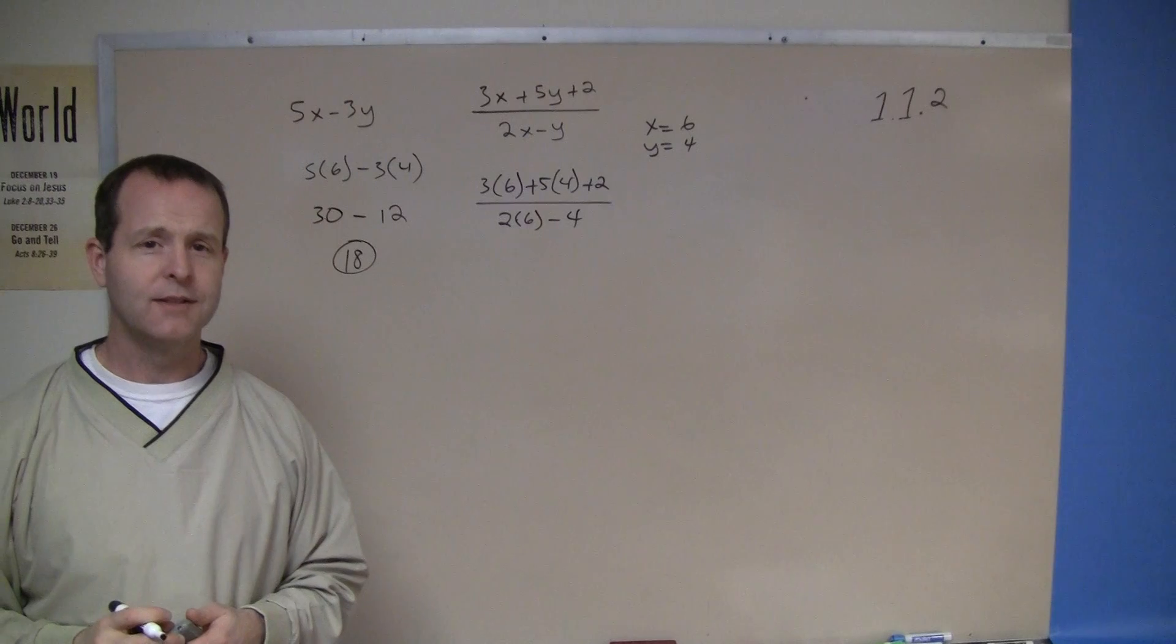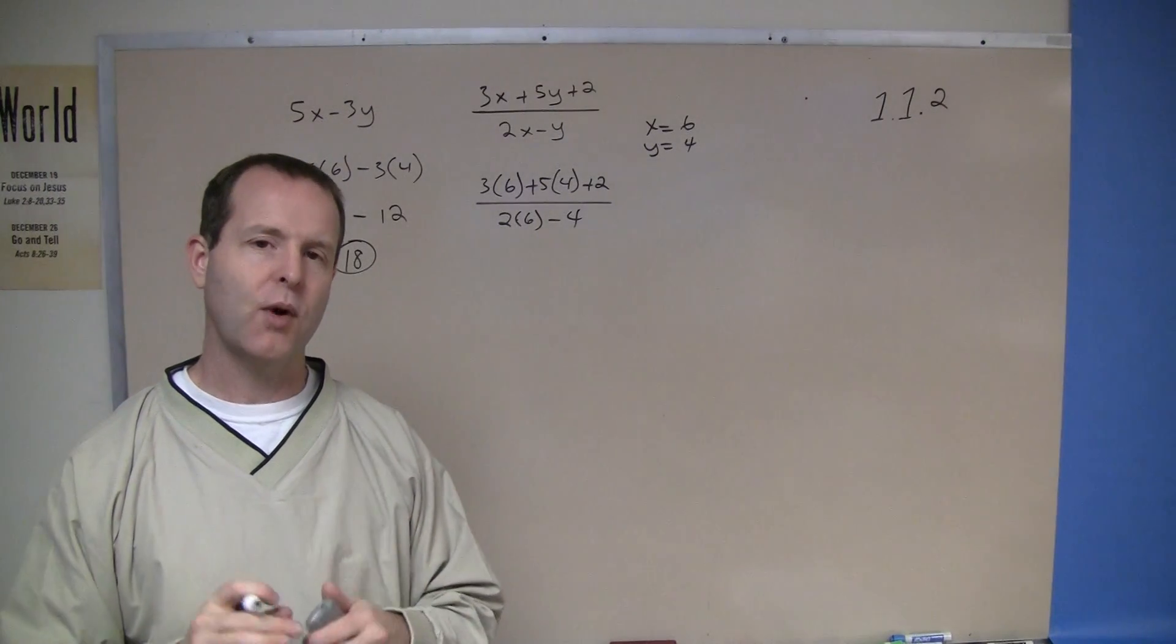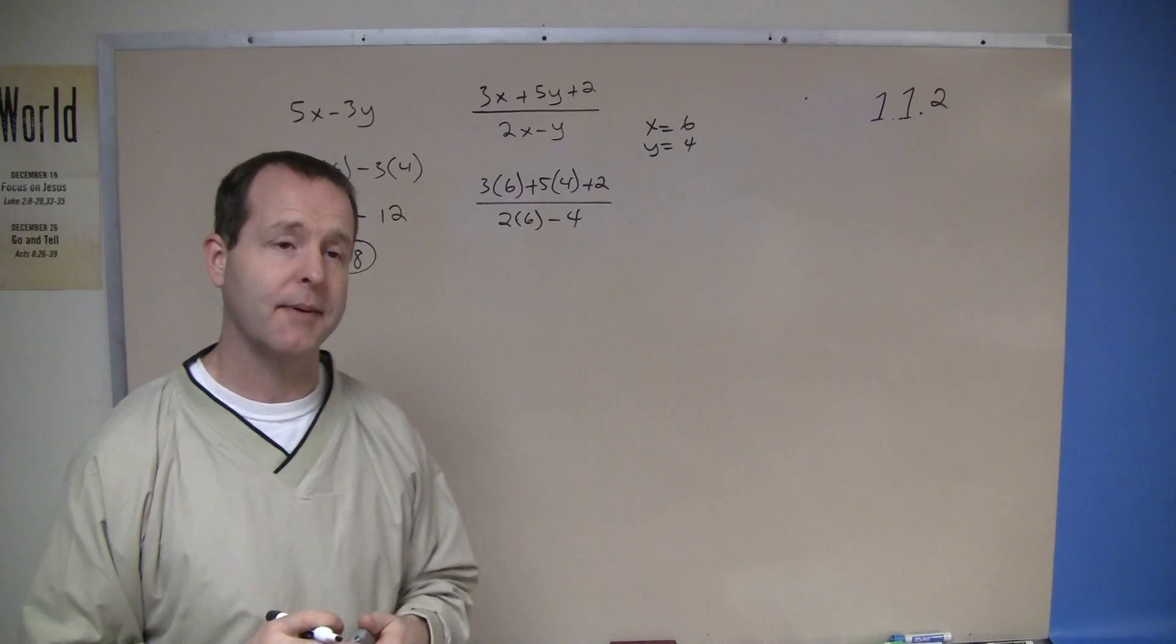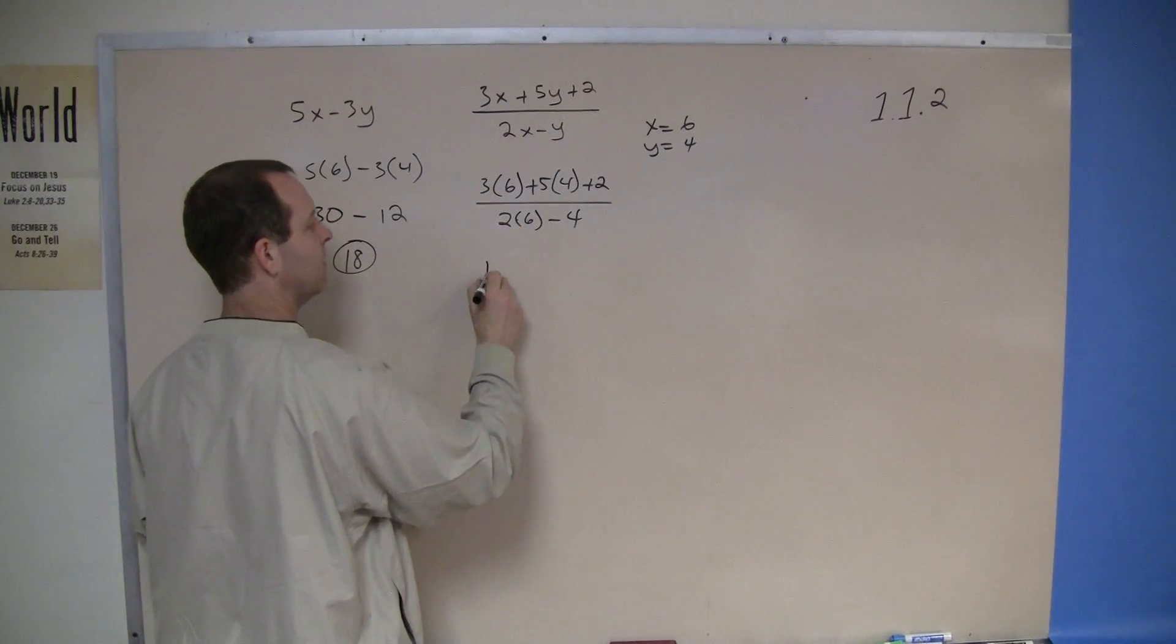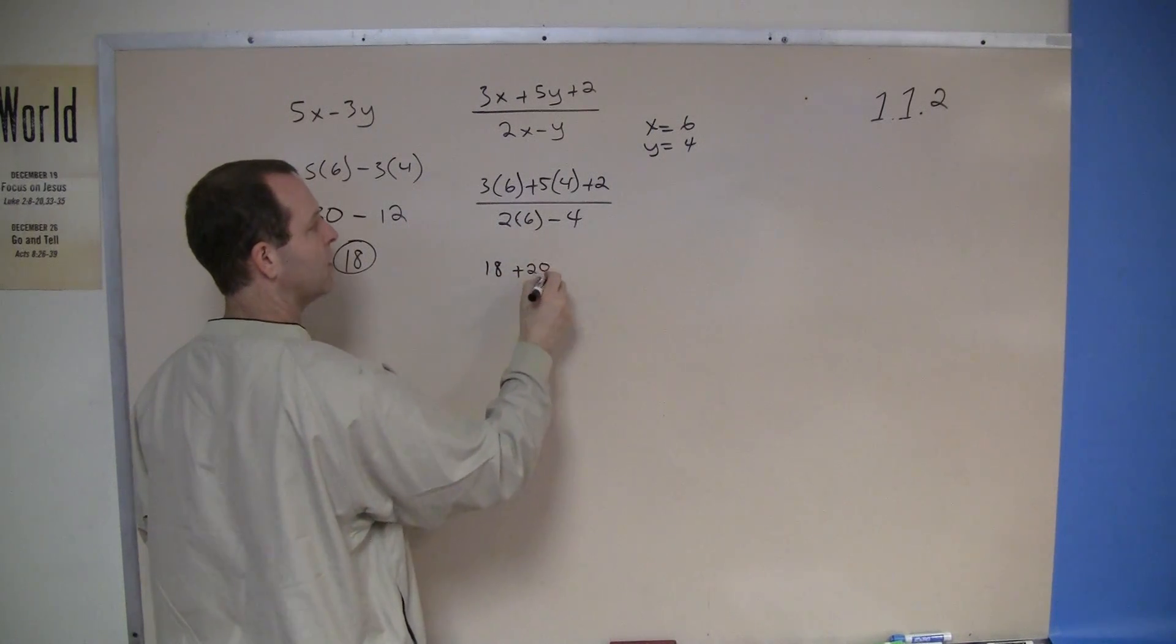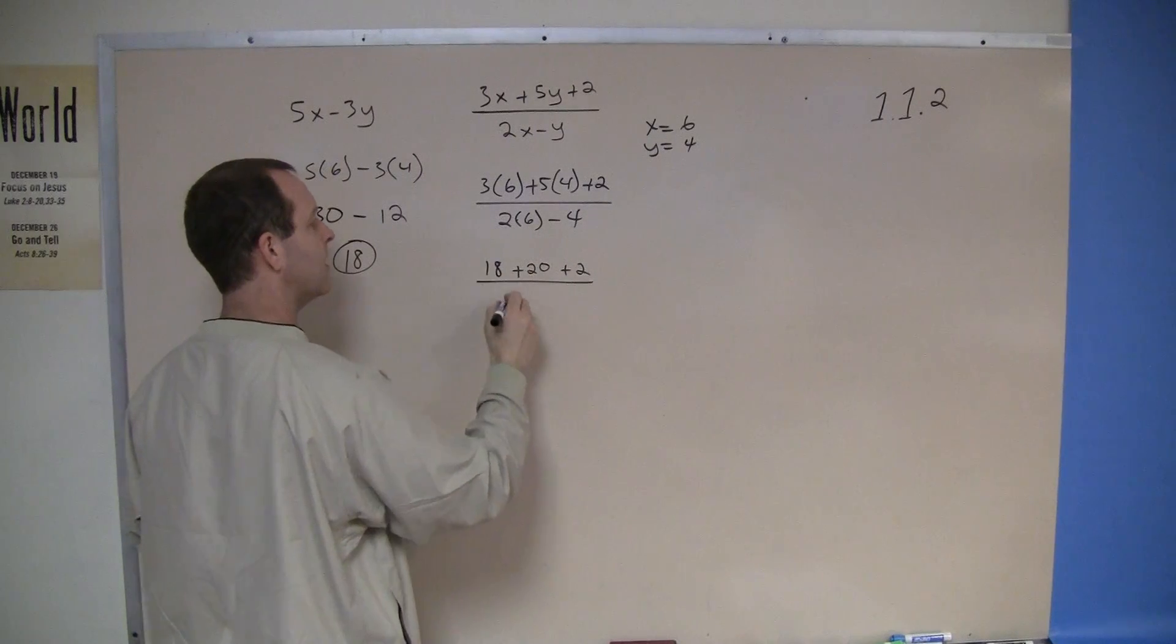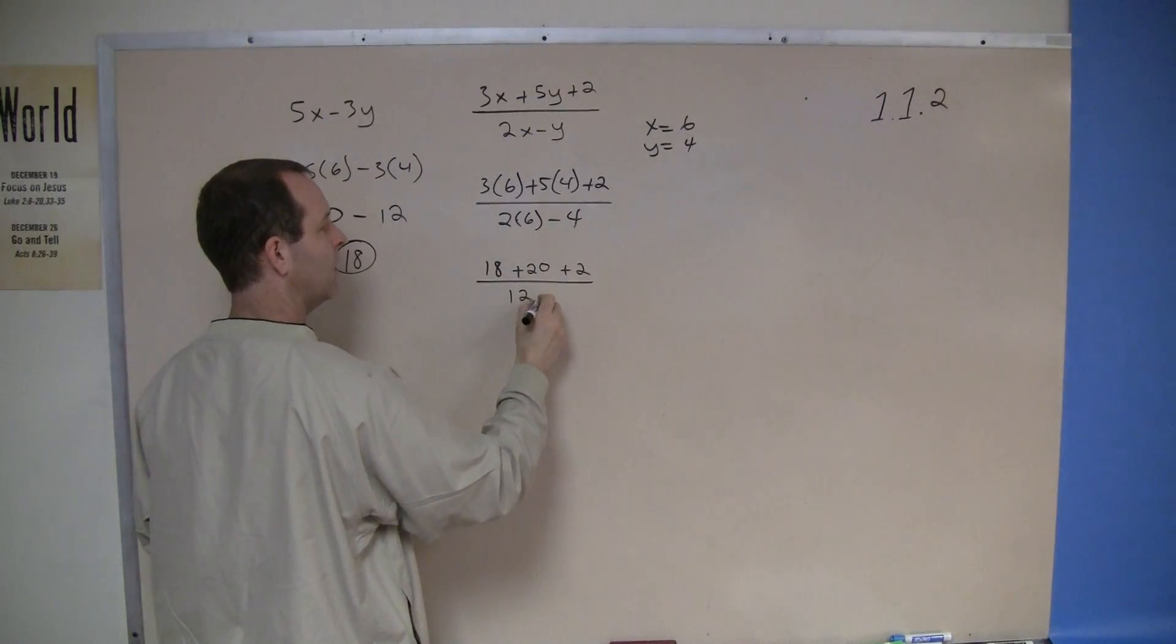And you have to be careful. The problems do get a little bit complicated in appearance, and that's why it's very careful just to take it one step at a time as you solve it. 3 times 6 is 18, plus 5 times 4, which is a 20, plus a 2, all over 2 times a 6, 12, minus a 4.